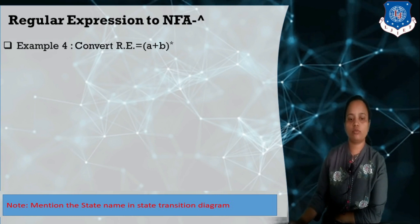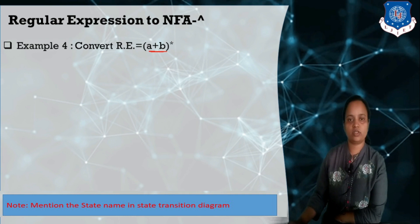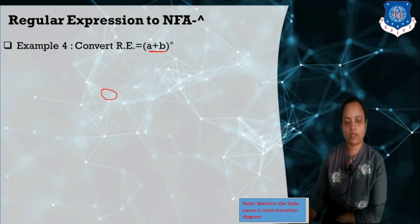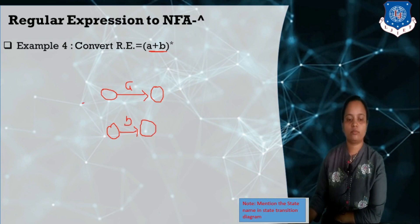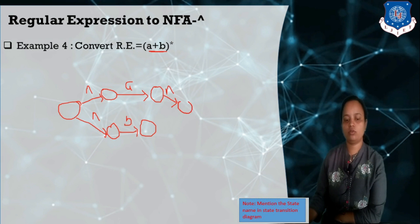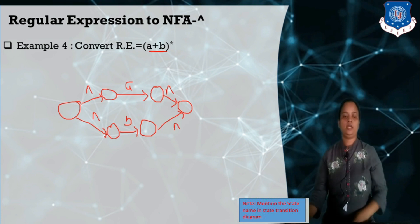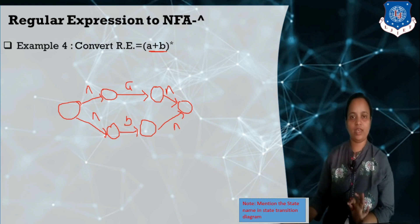How are we going to construct (A+B)*? There are two things given: one is the union operation and another is star. First, you need to construct the union operation. As we know how to construct NFA-null for A+B — first 'A', and this is the OR operation we have to perform first. This will be connected with the null input, creating the state which takes two paths. This is the diagram of NFA-null for A+B.